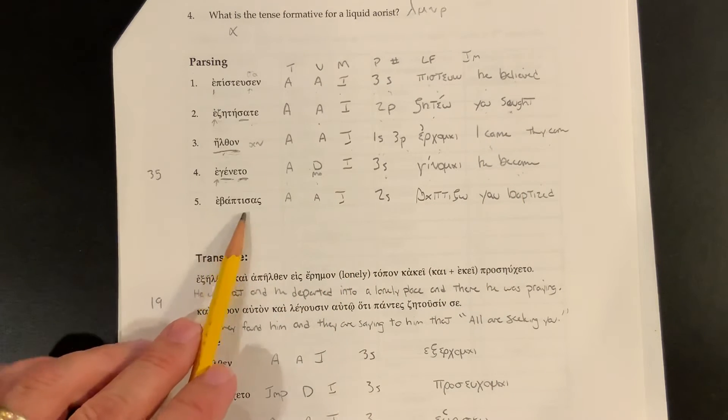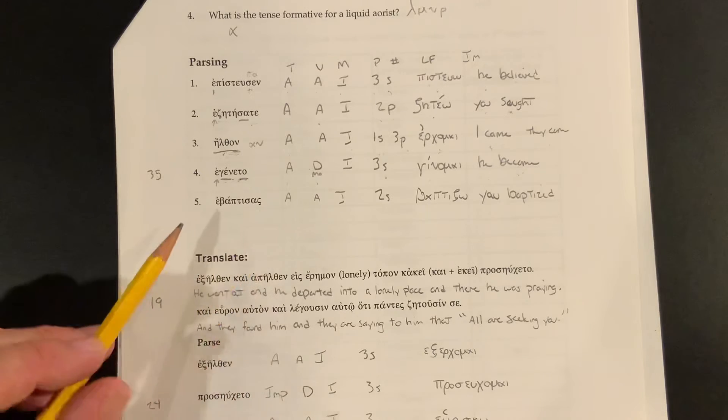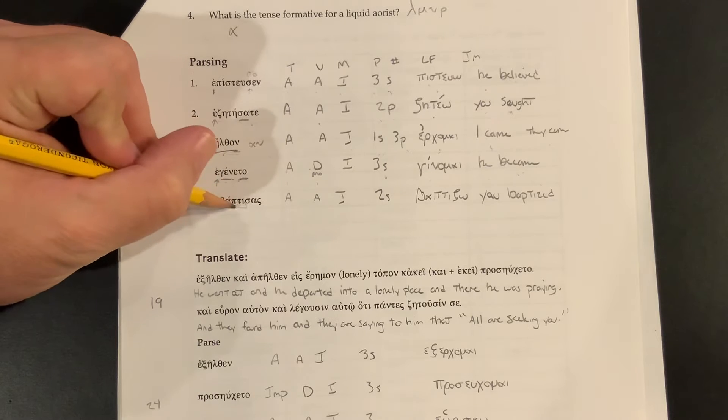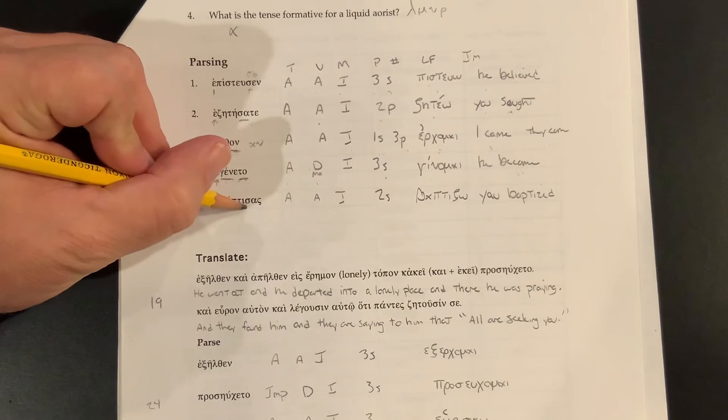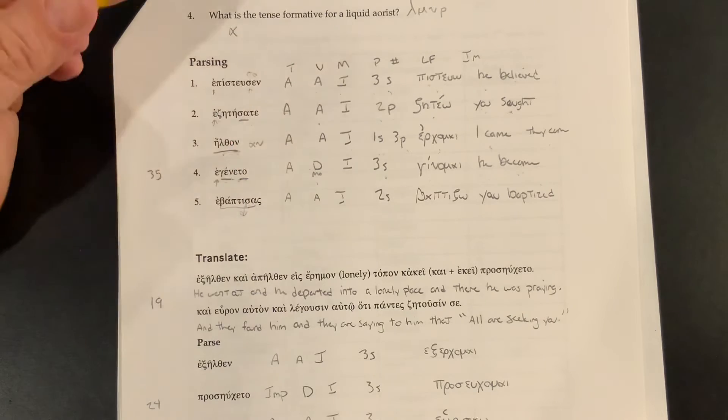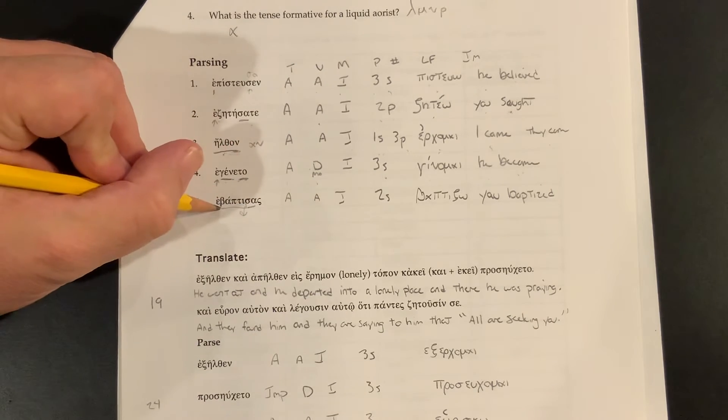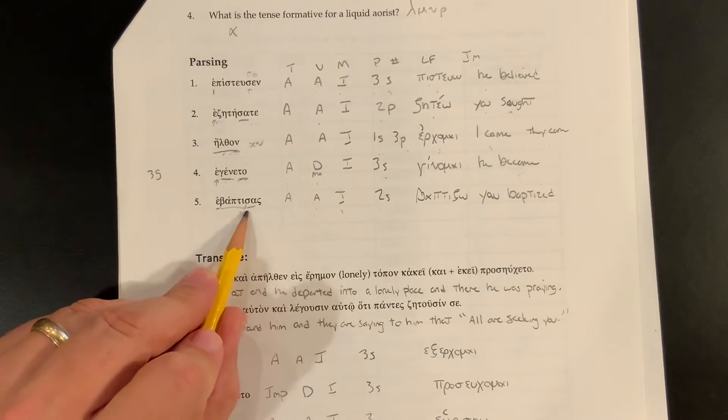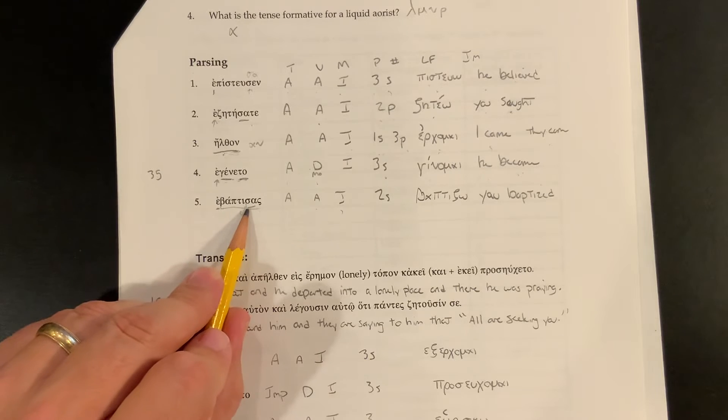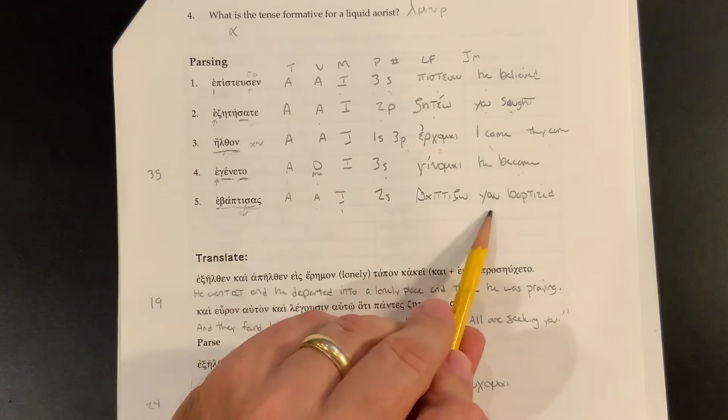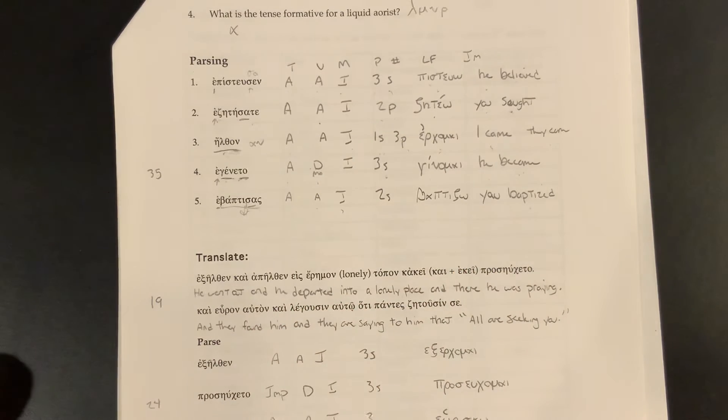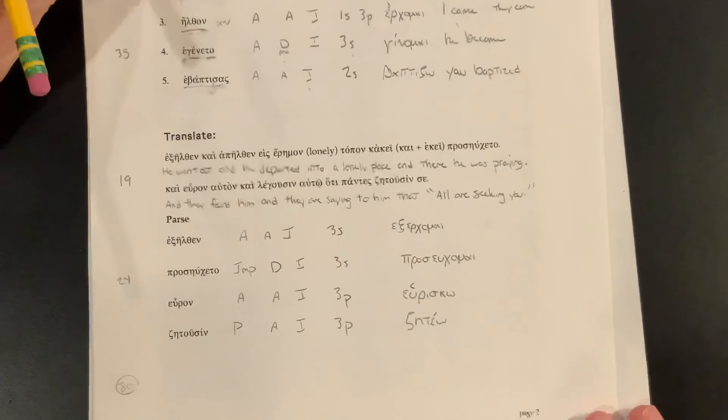Alright, abaptisas. Abaptisas. This is the verb baptizo. And we can see here, here's our stem. It does not have the delta on the end because the delta drops out in front of a sigma tense formative. And then we have our augment on there. This is an Aorist active indicative, second singular, sa, sas, sen, samen, and sate, tosan. Second singular. And it would be you baptized, you singular baptized.